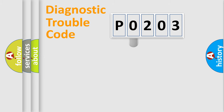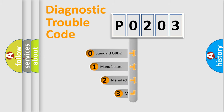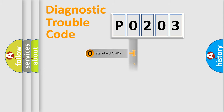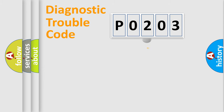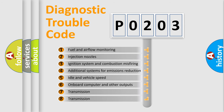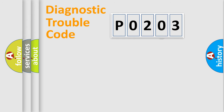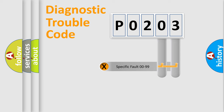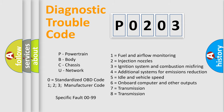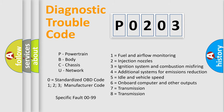This distribution is defined in the first character of the code. If the second character is expressed as zero, it is a standardized error. In the case of numbers one, two, or three, it is a manufacturer-specific error expression. The third character specifies a subset of errors. This distribution is valid only for the standardized DTC code, and only the last two characters define the specific fault of the group.